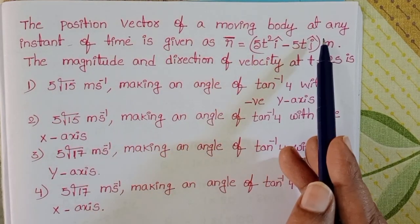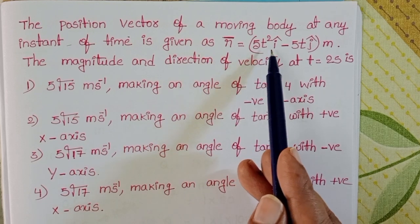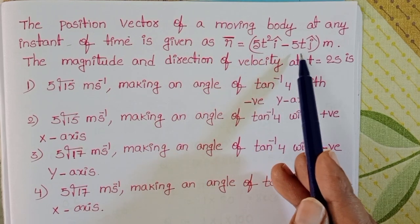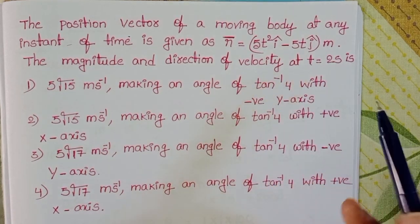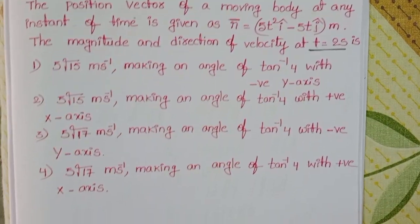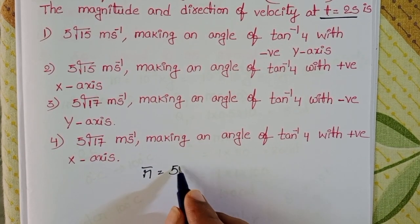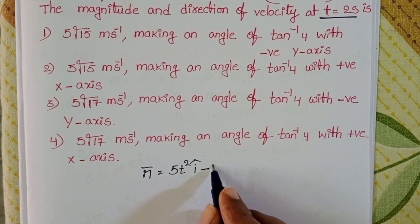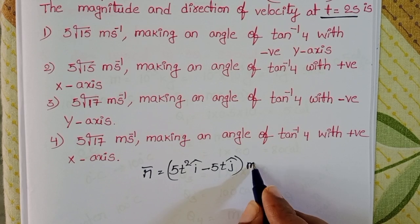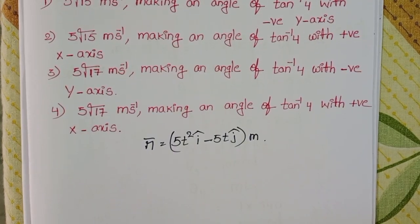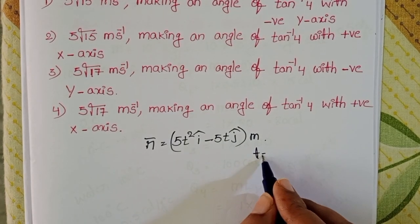The position vector of a moving body at any instant of time is given by r bar equals 5t² i cap minus 5t j cap meters. We have to find out the magnitude and direction of the velocity at t equals 2 seconds. In this question we know the position vector, and position vector is nothing but the displacement of the particle.